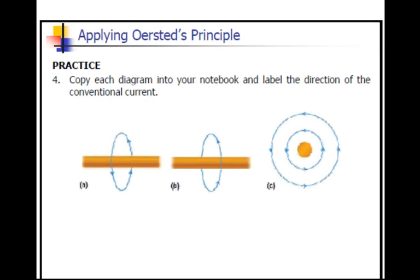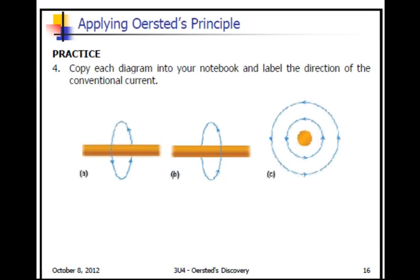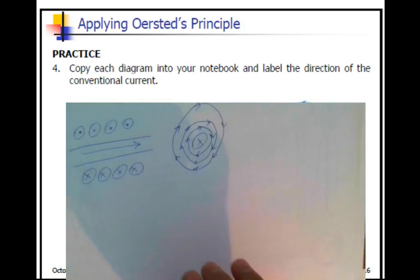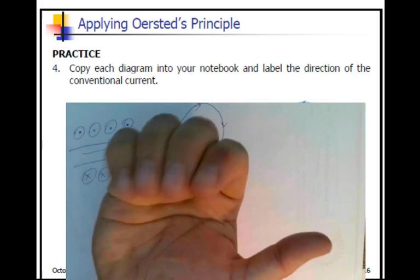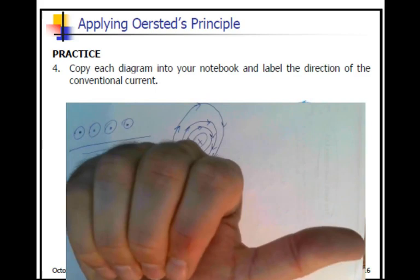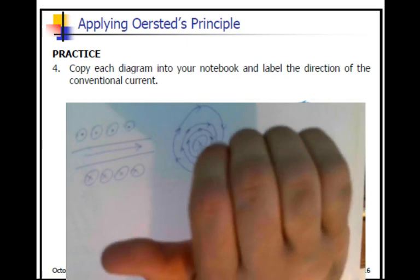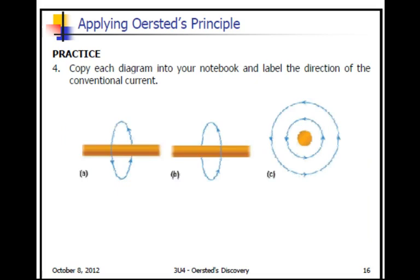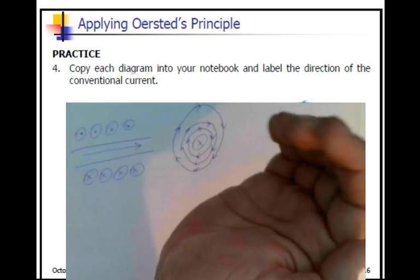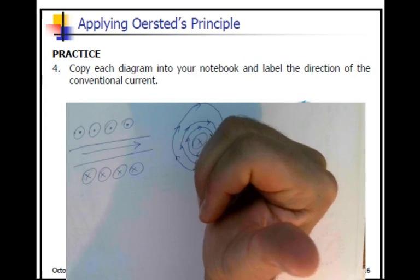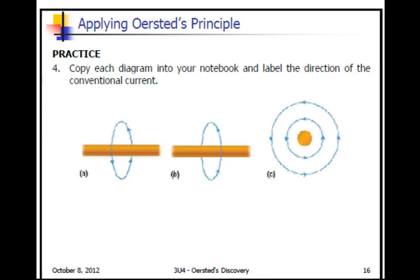Let's check on another question. For question four, it says copy each diagram into your notebook and label the direction of the conventional current. In the first situation, the curl is going this way, so if my fingers are curling this way, my thumb has to point to the right. My thumb would be pointing to the right, so there would be an arrow pointing to the right. In the second situation, the curl is this way, so my thumb would point to the left. For C, my curl is this way, so my thumb would point up. That means if I have my thumb pointing up, it would be a dot in the center of that conductor for C.